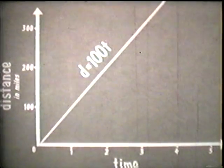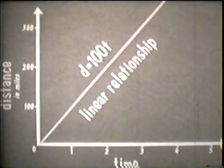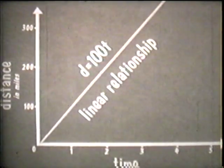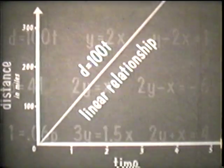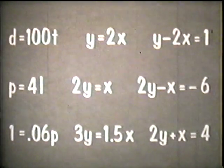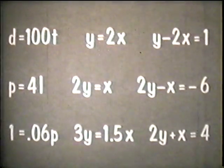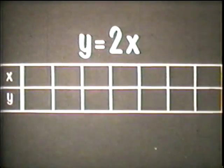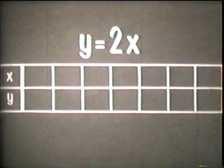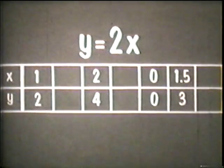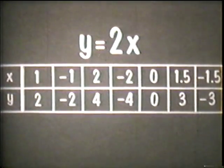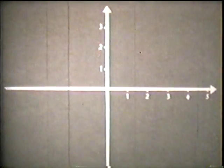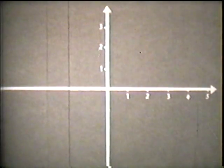This straight line shows what is referred to as a linear relationship — from the word line with AR added: linear. Linear relationships exist between the variables in equations such as these, which we call first-degree equations. In a first-degree equation such as y equals 2x, the two variables can have positive or negative values. To graph negative values, we use axes which are extended past the zero point in opposite directions from the positive values.